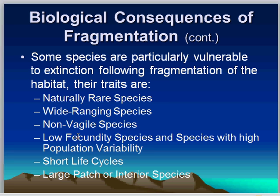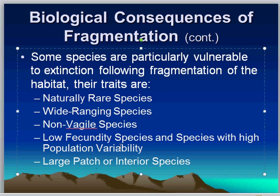Large patch or interior species are particularly vulnerable to fragmentation. These are species which simply cannot tolerate edge effects. Some understory species in a forest require high humidity, shade, and low temperatures to survive. These interior species are in effect over-fragmented in that they can only exist in fragments within the fragments — although a vast majority of a fragment may not be able to support them because the modified abiotic conditions due to edge effects extend well into the fragment.